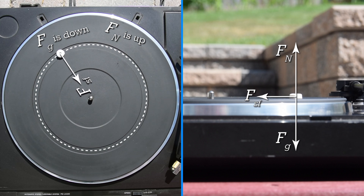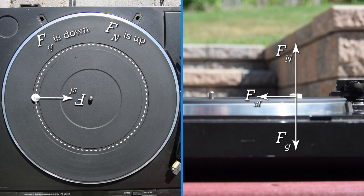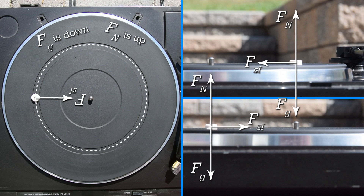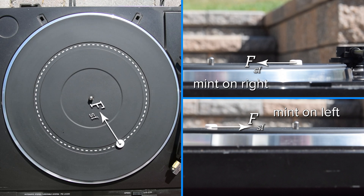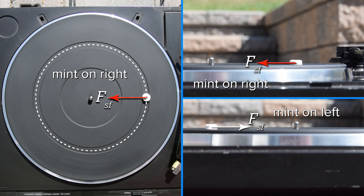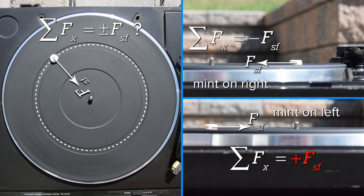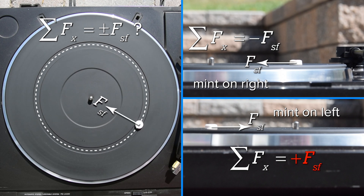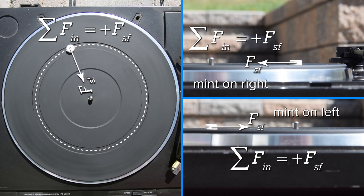Correct. Now, look at what happens when I set the top view in motion again. The force of static friction is always inward. And when we pause the video with the mint on the left, we can add that side view as well, along with its free body diagram. For clarity's sake, let's remove every force but the force of static friction from the free body diagrams. Notice: when the mint is on the left, the force of static friction points rightward and inward; and when the mint is on the right, the force of static friction points leftward and inward. If we were to sum the forces in the x-direction, this would be confusing because the direction of the force of friction would be changing. When the mint is on the right, the net force in the x-direction would equal the negative force of static friction; however, when the mint is on the left, the net force in the x-direction would equal the positive force of static friction. This is unworkable, which is why we sum the forces in the in-direction, and the force of static friction in this example is always in the in-direction.